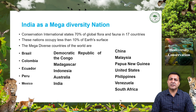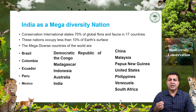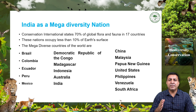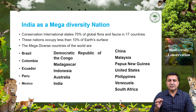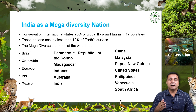According to Conservation International, about 70 percent of the world's flora and fauna exist in only 17 mega diverse countries. These nations comprise just under 10 percent of the surface of the earth. The mega diverse countries of the world include Brazil, Colombia, Ecuador, Peru, and Mexico.